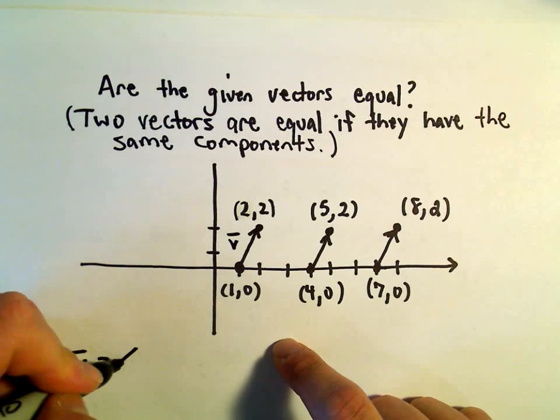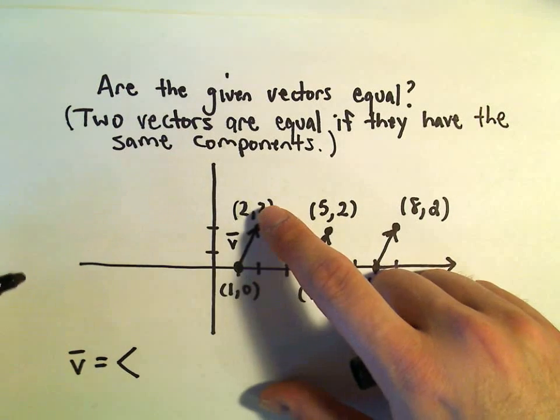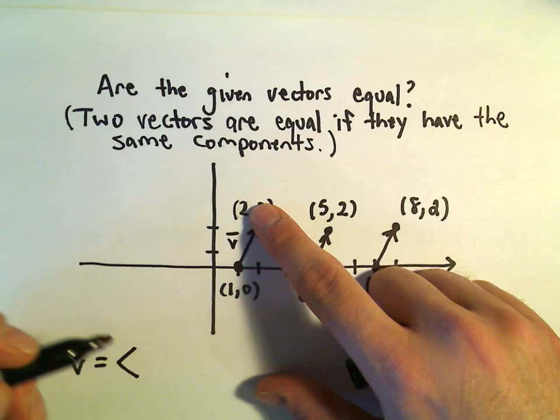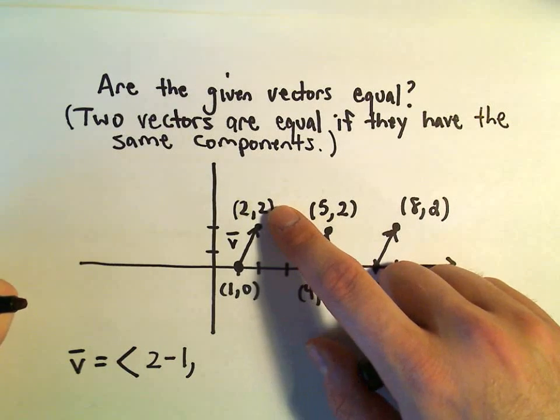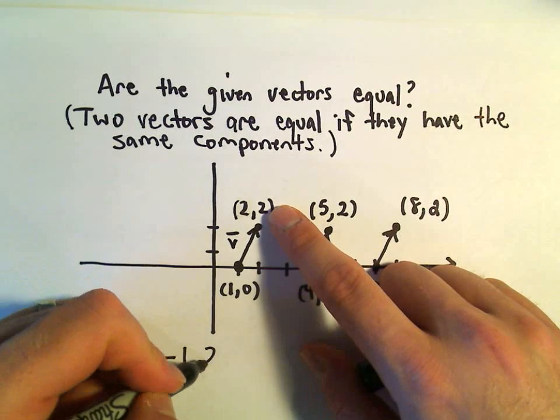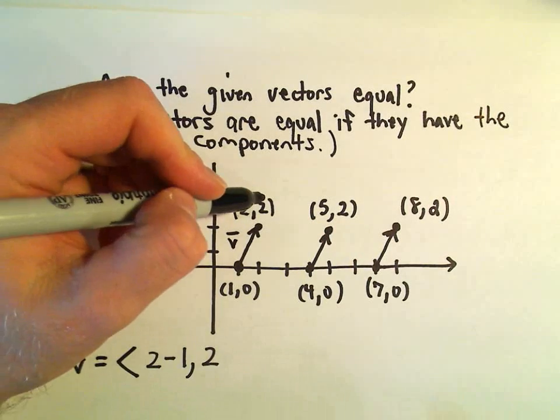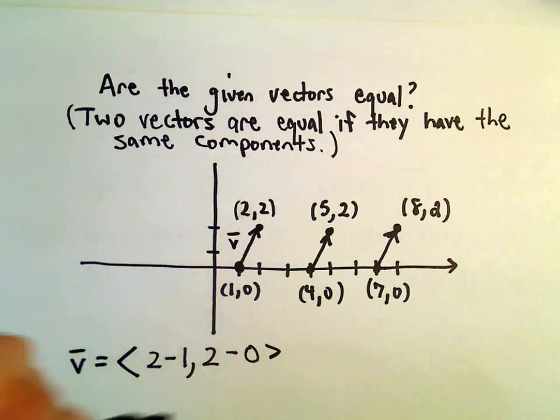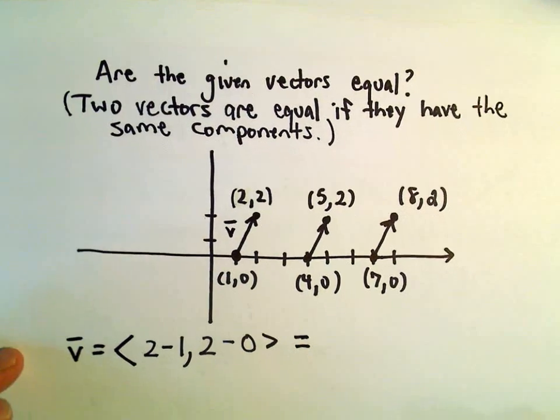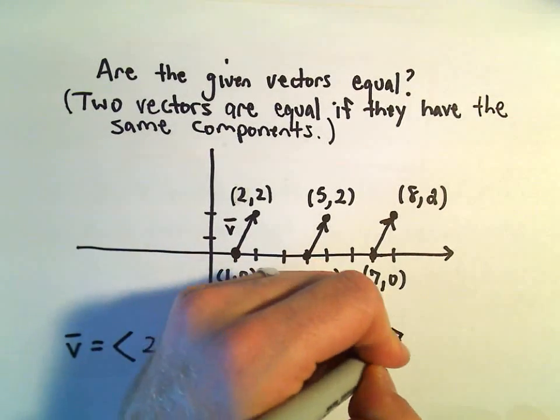So vector v, we could find its component form. We would subtract the x-coordinates. We take the stopping point minus the starting point, and then we'll do the same thing with the y-coordinates. We'll take the y-coordinate you finish at and subtract away the y-coordinate that you started with. So for vector v, we would get that this simply has components (1,2).